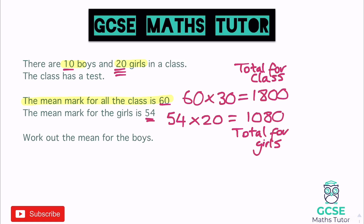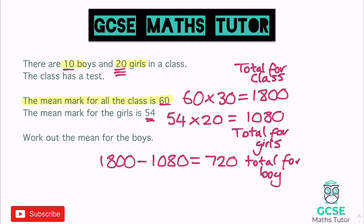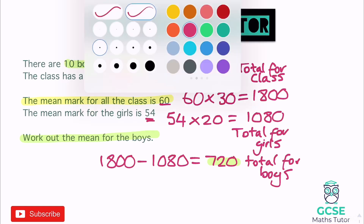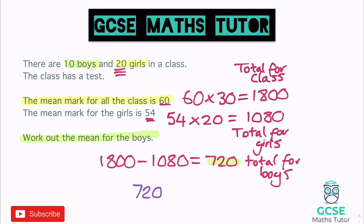54 times 20 gives us 1080, and that is the total for the girls. The class is made up of boys and girls: total for the class is 1800, total for the girls is 1080. So logically we can subtract to find the total for the boys: 1800 take away 1080 leaves us with 720. That's the total for the boys. Now we can work out their mean - divide 720 by 10 boys.